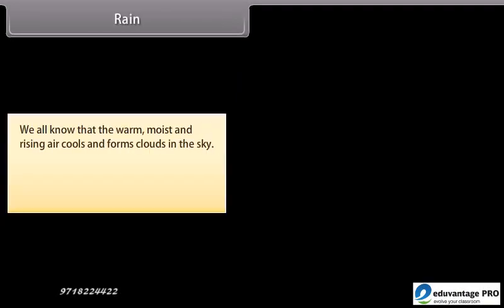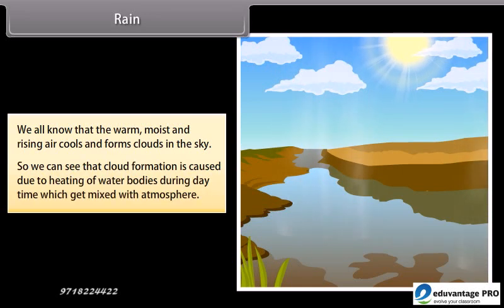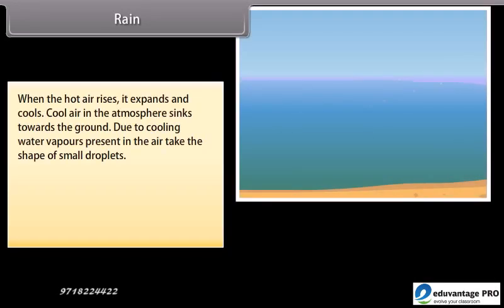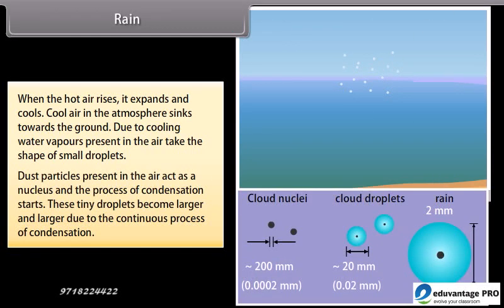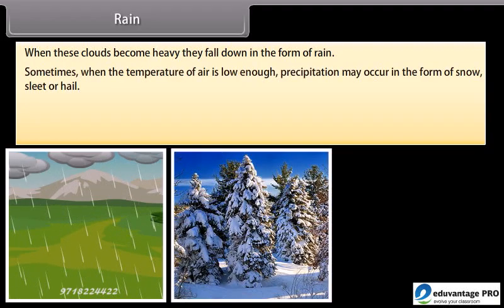Warm, moist, rising air cools and forms clouds in the sky. Cloud formation is caused by the heating of water bodies during daytime, with water vapor mixing with the atmosphere. When hot air rises, it expands and cools. Cool air sinks towards the ground. Due to cooling, water vapors in the air take the shape of small droplets, and dust particles in the air act as a nucleus as condensation starts. These tiny droplets become larger and larger through continuous condensation. When these clouds become heavy, they fall down as rain. Sometimes, when the temperature of air is low enough, precipitation may occur as snow, sleet or hail.